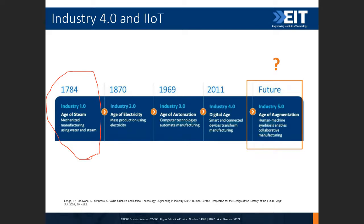Then we migrated into Industry 2.0, where the path was paved to mass production, enabled by both division of labour and the electricity revolution — a technological revolution. We had the invention of conveyor belts in the 1870s, and in the early 1910s there was widespread use of electric power, telegraphs, and automobiles. This gave rise to assembly lines and sequential production. That was Industry 2.0.